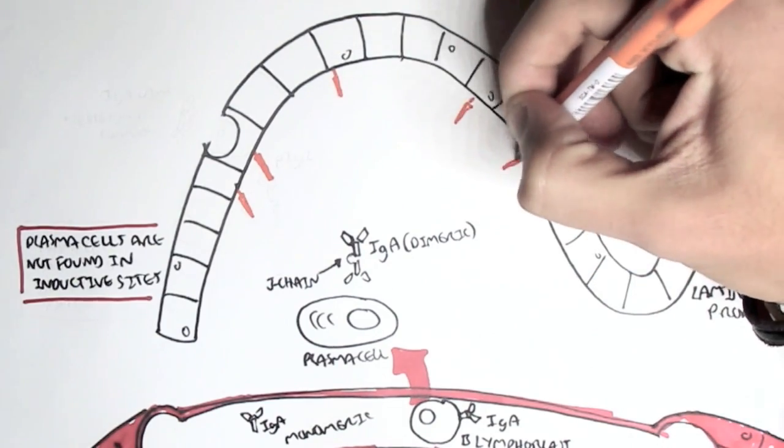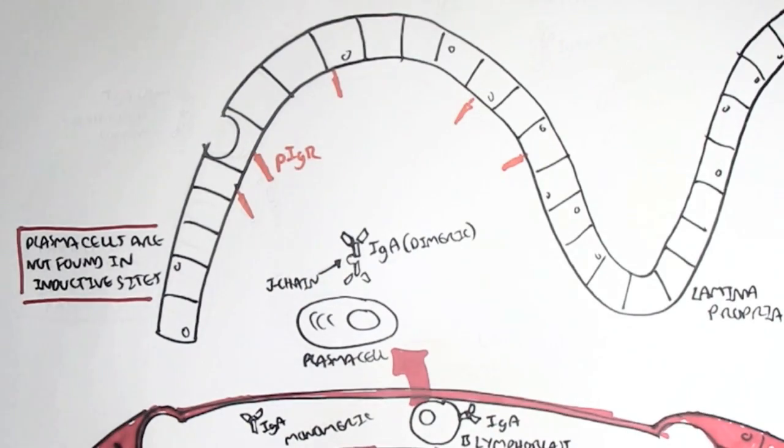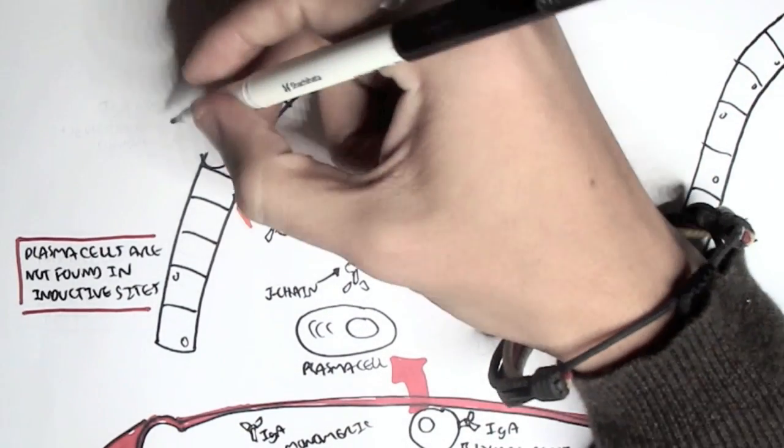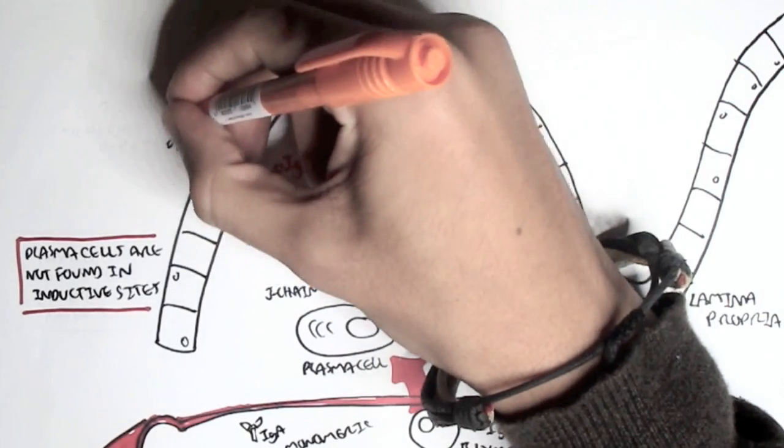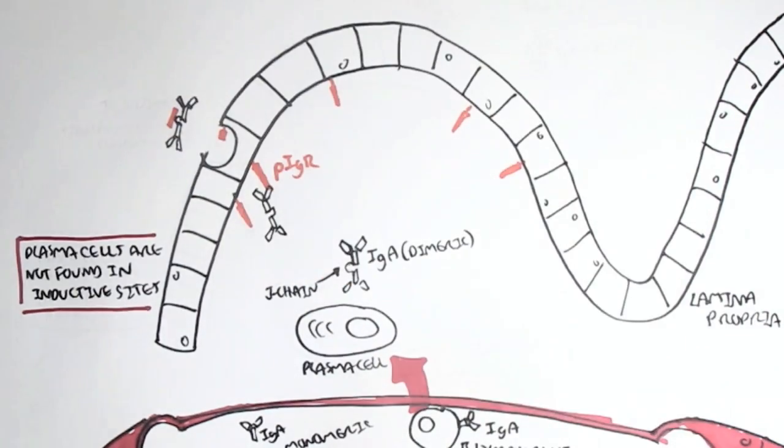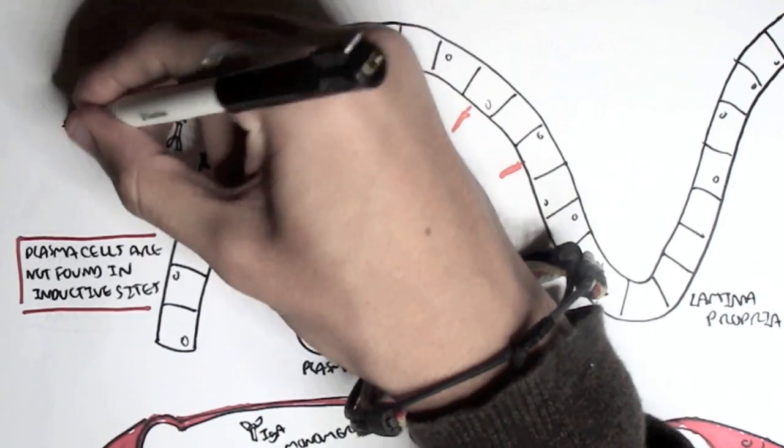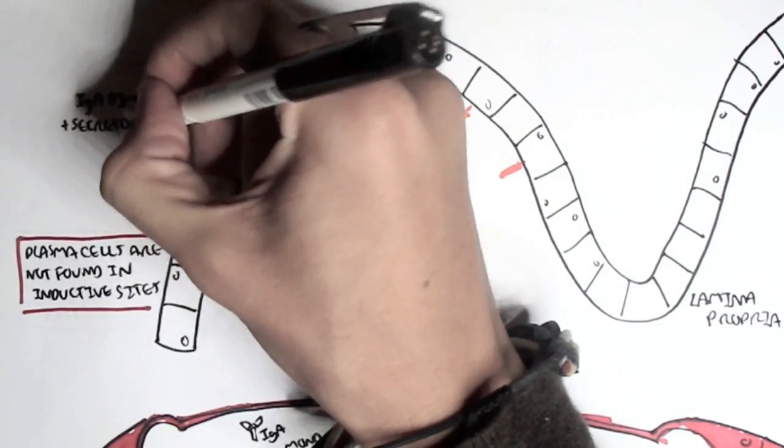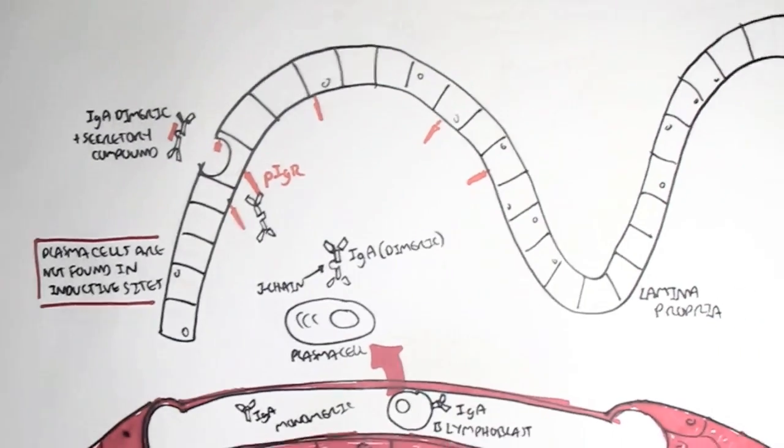There are special receptors on the basal aspect of these epithelial cells, called PIGR, which actually has affinity for the dimeric IgA antibodies. And once the IgA antibody binds to the PIGR, it gets endocytosed within the cell and then expelled out into the lumen. As it does this, the dimeric IgA antibody, the J chain, takes part of the PIGR receptor and forms the IgA plus the secretory component.